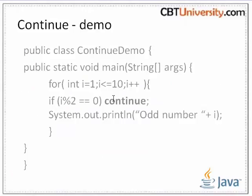Next we will take the continue demo. In this, if a specific condition is met, it will continue the loop; if it is not met, it will print the output. This is to print odd numbers. The continue statement skips the current iteration of a for, while, or do-while loop.